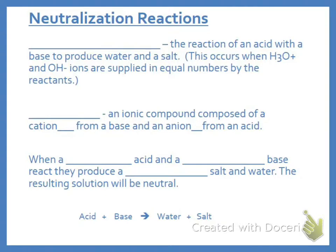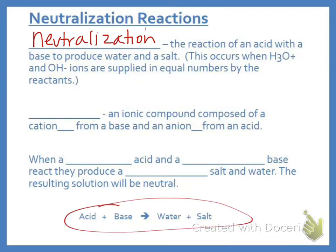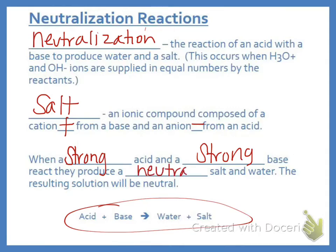Neutralization reactions is the last thing we're going to talk about for these notes in titration. When we react an acid plus a base, we get water plus a salt. Salts are not just NaCl. They're an ionic compound composed of the cation from the base and the anion from the acid. We need to know when a strong acid reacts with a strong base, we produce a neutral salt and water. So this resulting solution will be neutral.